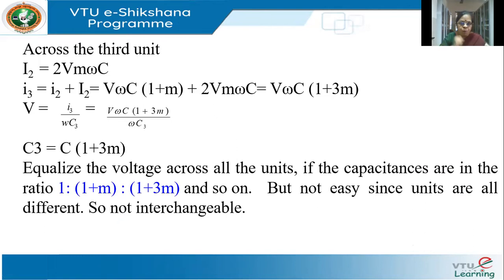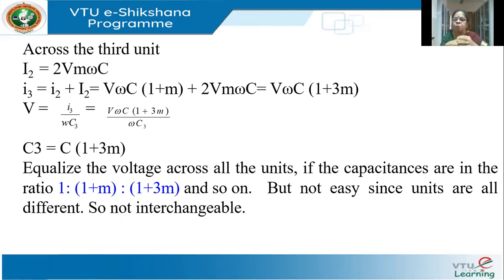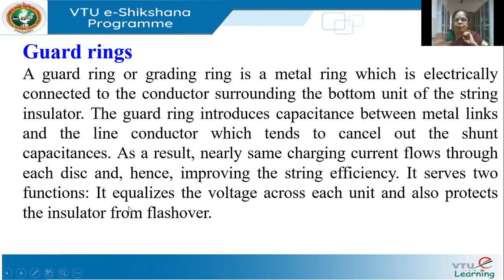There are two problems with capacitor grading. One is that all units are not identical, so you lose the modular structure. If one goes bad, you can't just replace it with another — whereas with all identical units, one disk fails and you can replace it with another disk. So the units are not interchangeable. This is the second method and it has its own drawback.